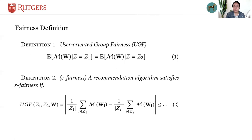We define an epsilon-fairness recommendation algorithm as Definition 2. In this formulation, epsilon represents the strictness of fairness requirements.